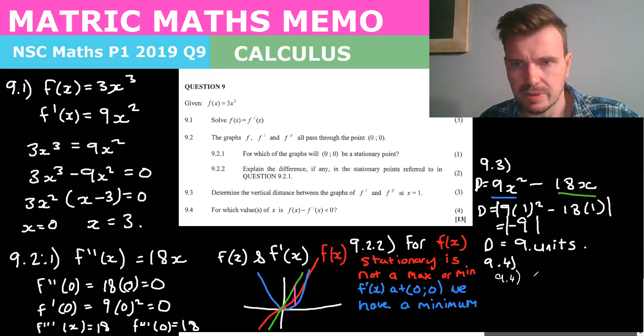So 9.4, so f of x is 3x cubed minus f dash of x is 9x squared and we're doing what's called the critical value so we're not solving essentially we're saying the critical value.